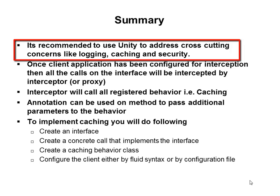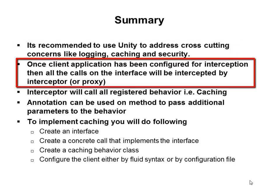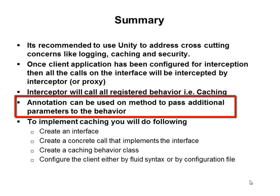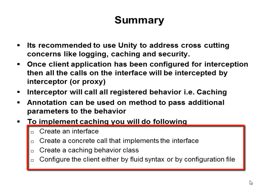Summary: It is recommended to use Unity to address cross-cutting concerns like logging, caching, and security. Once the client application has been configured for interception, all calls on the interface will be intercepted by the interceptor. The interceptor will call all registered behaviors — caching in our case. Annotation can be used on a method to pass additional parameters to the behavior. If annotation has not been defined on a method then the behavior will ignore that method. To implement caching you need to: create an interface, create a concrete class that implements the interface, create a caching behavior class, and configure the client using either fluid syntax or a configuration file. Thank you so much for attending the course.